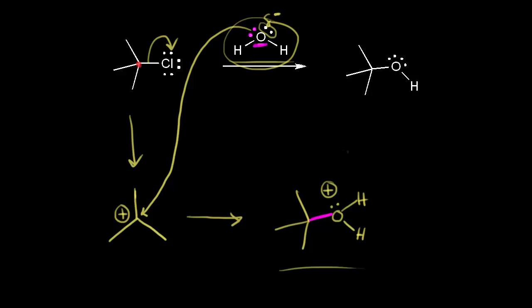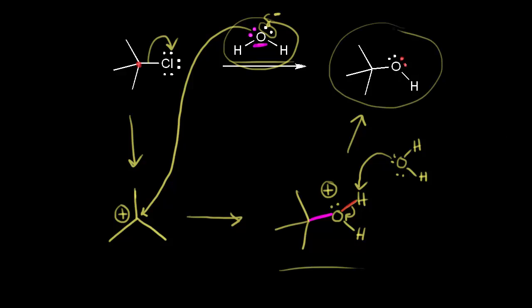Comparing with our final product, we only need a proton transfer — an acid-base reaction. Another molecule of water comes along and acts as a base, taking one of the protons and leaving those electrons behind on the oxygen. Our final product is neutral — we form tert-butanol. This is called a solvolysis reaction, which means our solvent (water) is also functioning as the nucleophile in this mechanism.